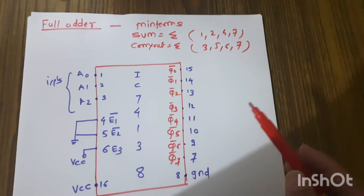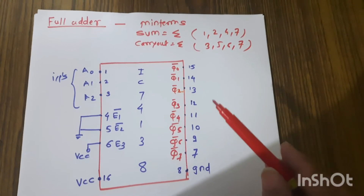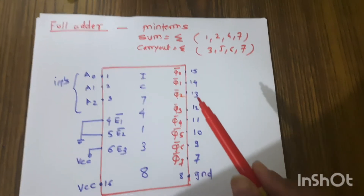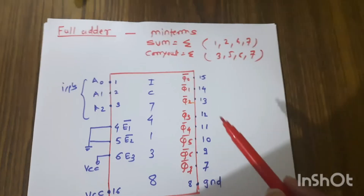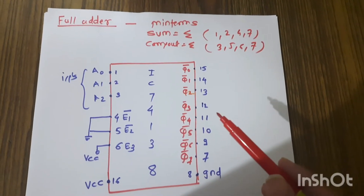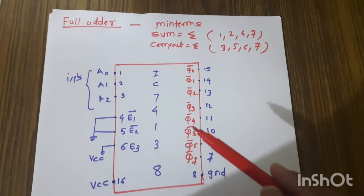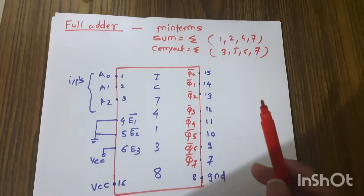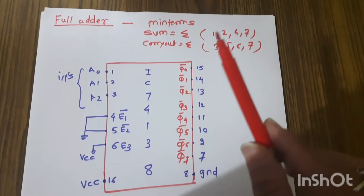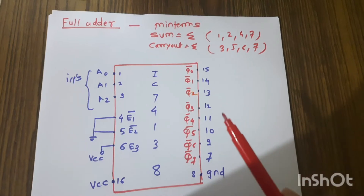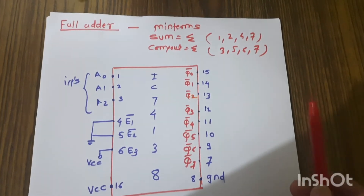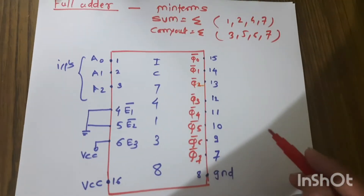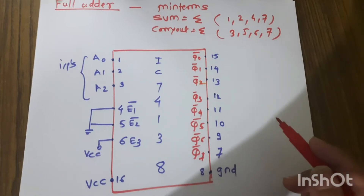However, there is a twist: since Q0 to Q7 outputs are all active low, we cannot connect them directly to an OR gate. We need to first connect them through a NAND gate. So all the min terms are connected to a NAND gate first, and then to the OR gate.